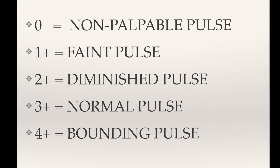You also want to assess the strength of a pulse. Pulses can be described as: zero, indicating no palpable pulse; one-plus, indicating a faint pulse; two-plus, suggesting a slightly more diminished pulse than normal; three-plus, indicating a normal pulse; and four-plus, indicating a bounding pulse.